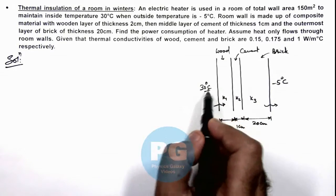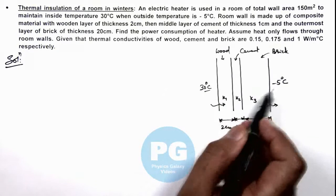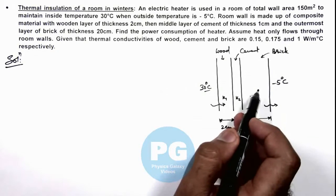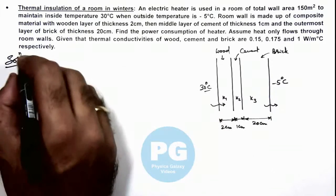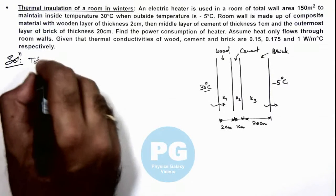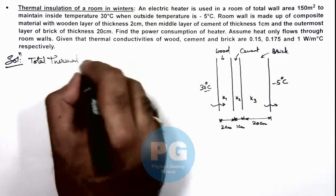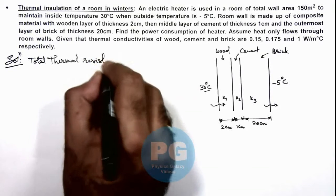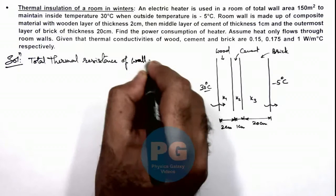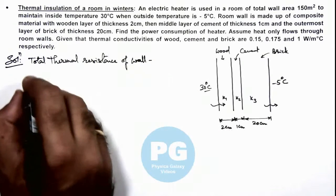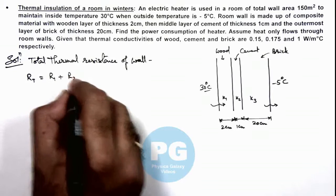For the conduction of heat from inside to outside, we consider the 3 layers in series combination and find the total thermal resistance of the wall. This total thermal resistance is given as R1 plus R2 plus R3, where R1, R2, and R3 are the thermal resistances of the three layers of the wall.